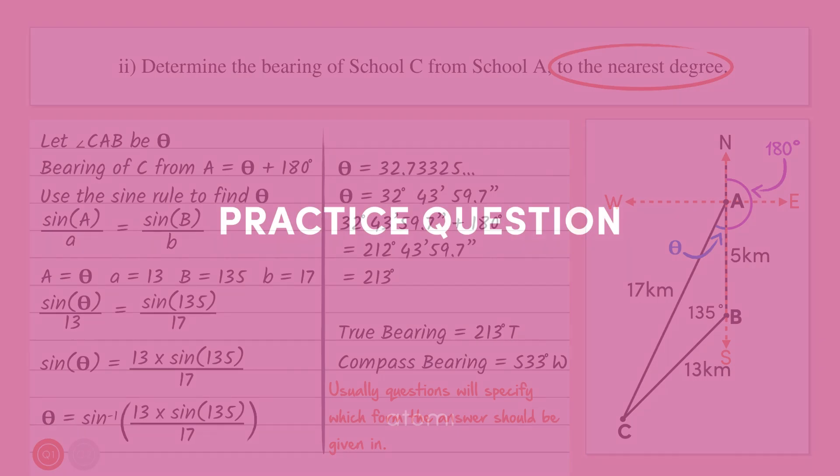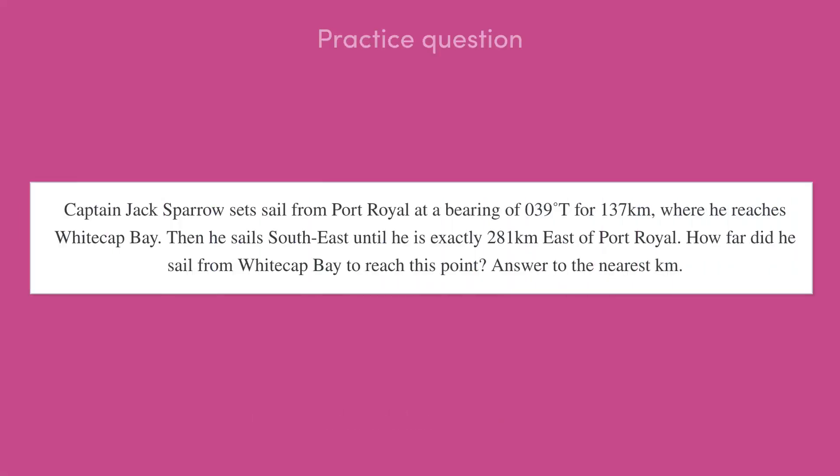So let's try another one out. Captain Jack Sparrow set sail from Port Royal at a bearing of 039 degrees true for 137 kilometers where he reaches Whitecap Bay. Then he sails southeast until he is exactly 281 kilometers east of Port Royal. How far did he sail from Whitecap Bay to reach this point? Answer to the nearest kilometer.